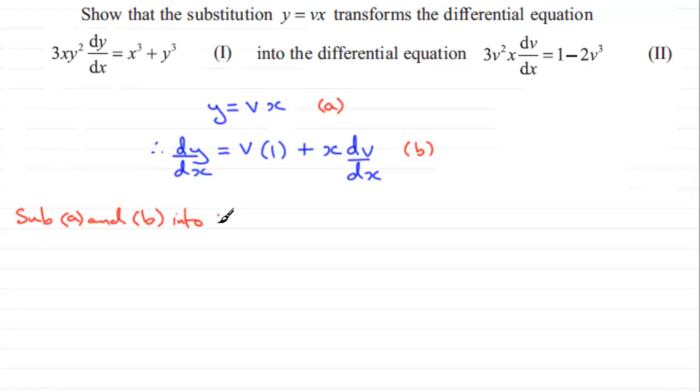So if we do that, we therefore have 3 times x times y squared, but y squared would be v squared x squared, so just put that as v squared x squared, and then we've got to multiply this by dy by dx.